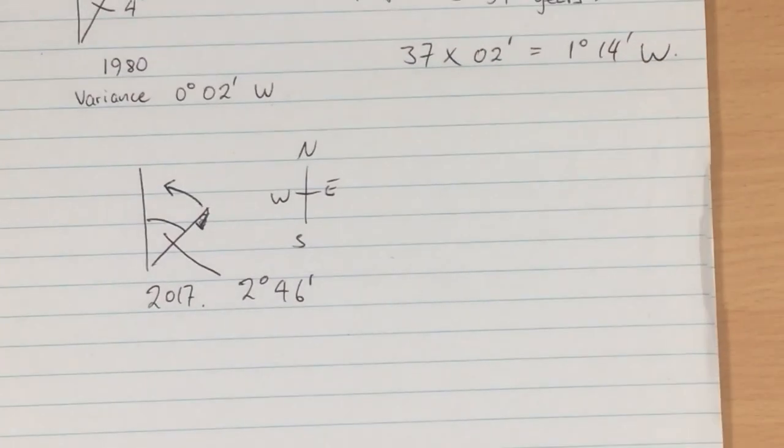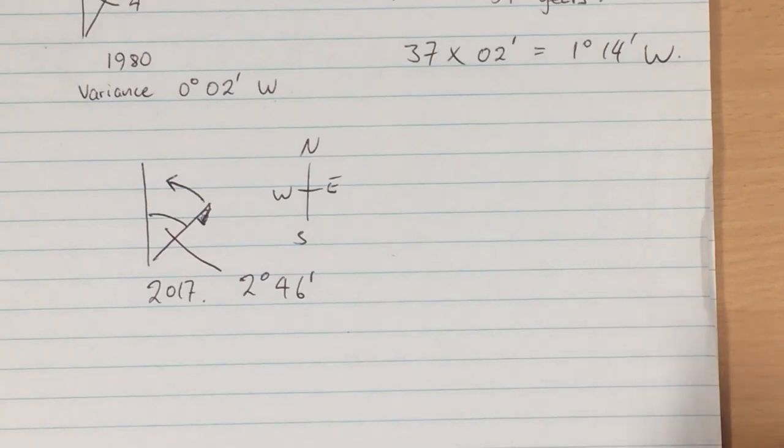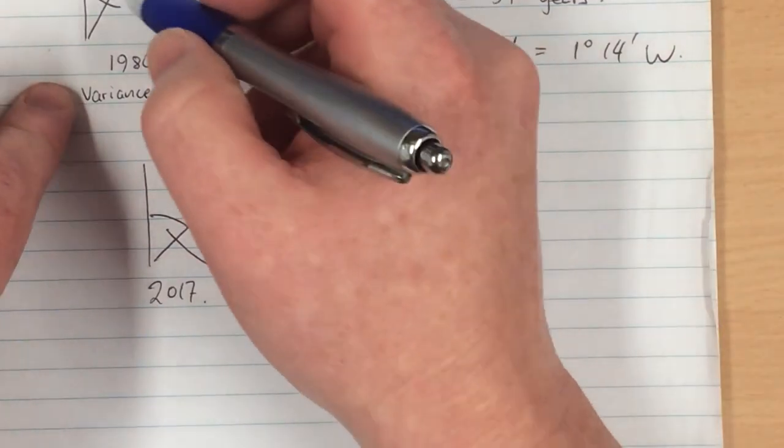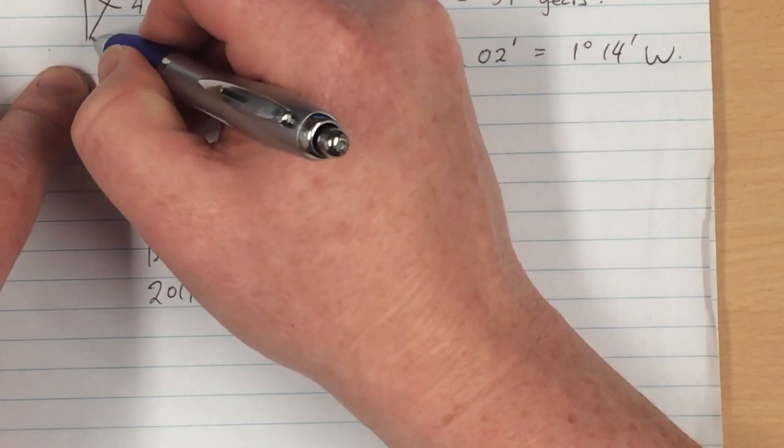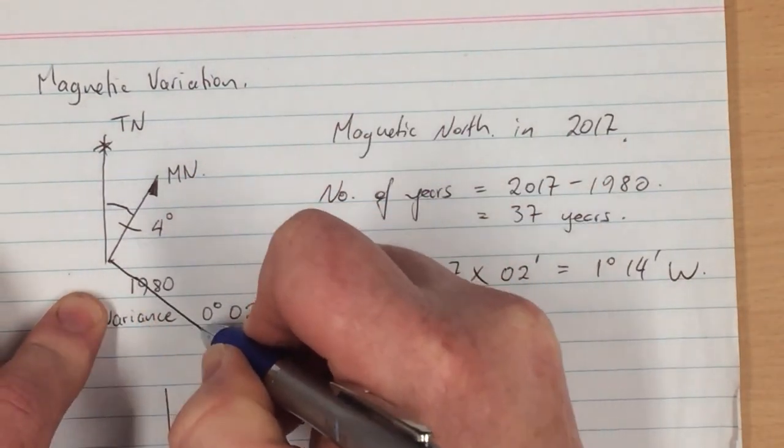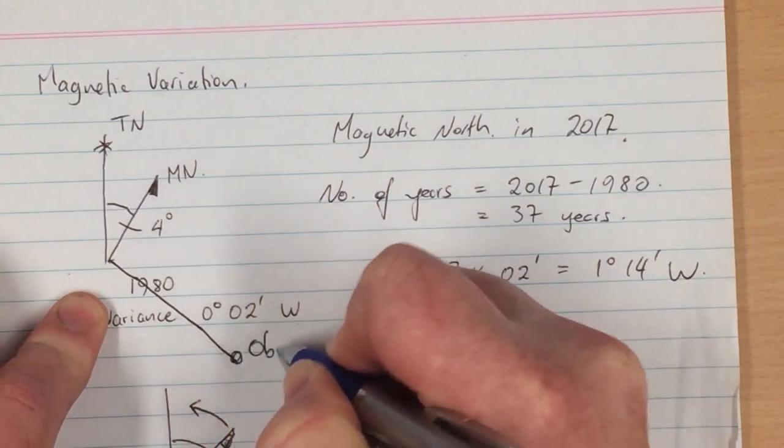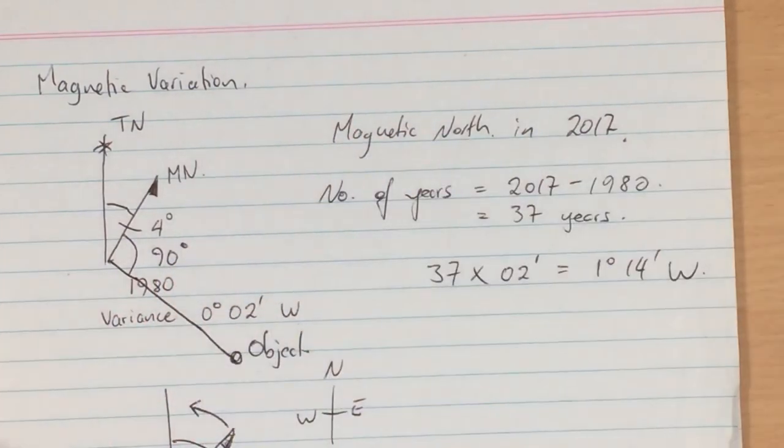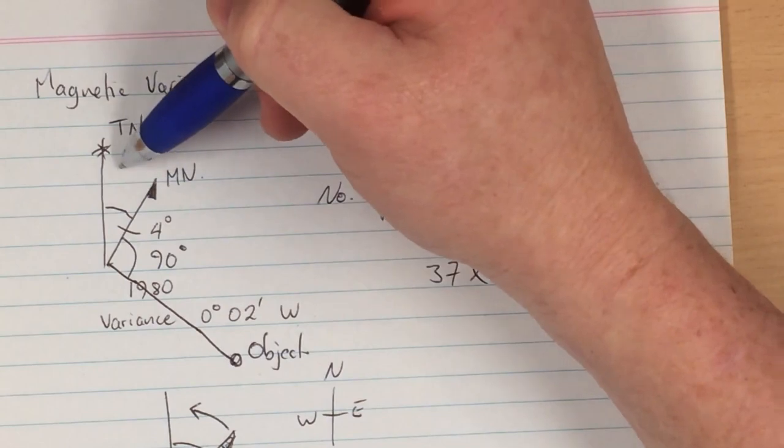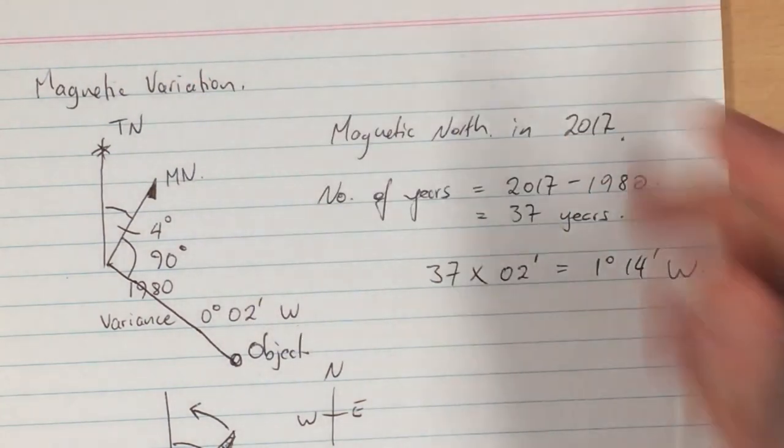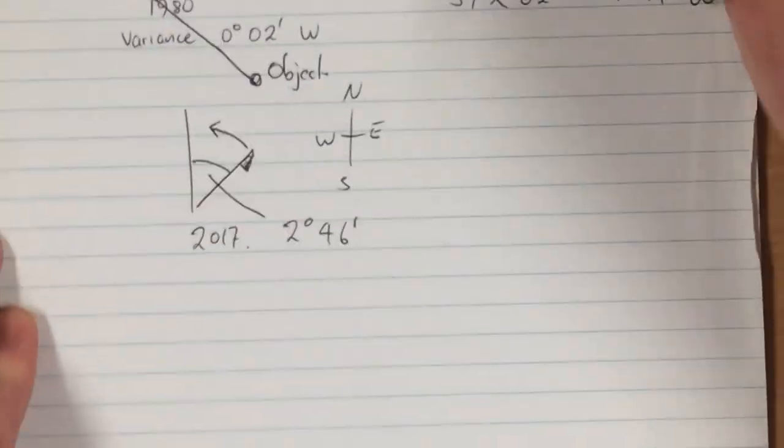What we are usually interested in is the bearing of a particular landmark or object. So if we had an object whose magnetic bearing was, say for example, 90 degrees, so I will just draw that in up here, 90 degrees. So if this was the bearing to an object and in 1980 that was at 90 degrees, then as magnetic north drifts in a westerly direction, then the bearing is actually going to increase because the position of the object doesn't change.